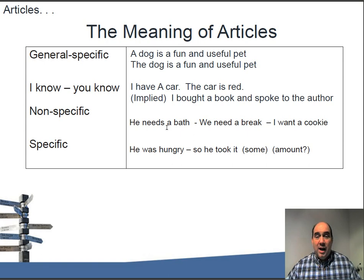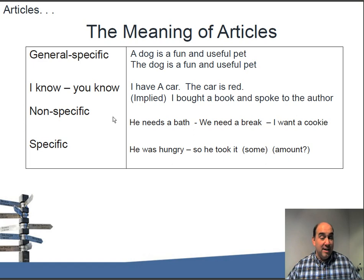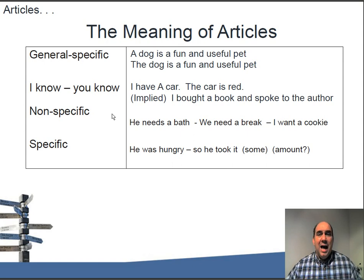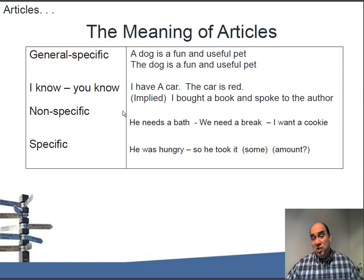A great grammar book example: 'I bought a book and spoke to the author.' You might expect 'an author,' but the author is implied and known because of the book - it's inferred from the previous noun. Another use is nonspecific: 'he needs a bath' - not a particular bath; 'we need a break' - just a generic break; 'I want a cookie' - not particular about which one. But if you see a plate of cookies and find the one with the most chocolate chips, you might say 'I want that cookie,' or if there's only one left, 'I want the cookie.'